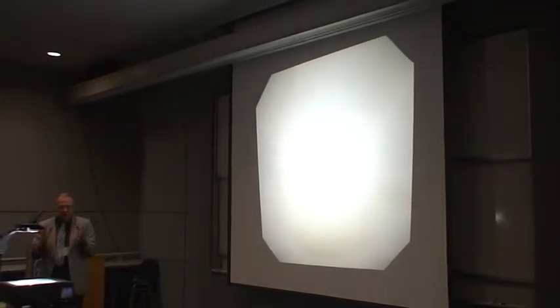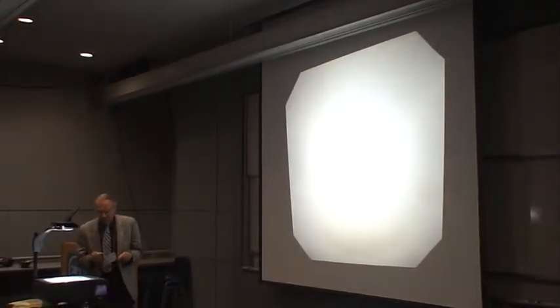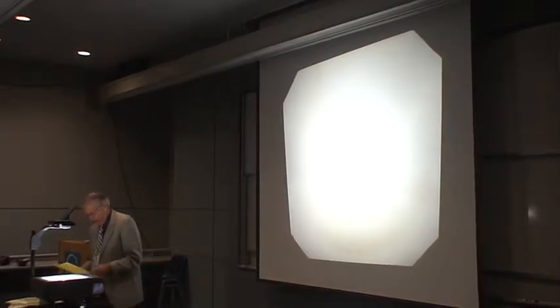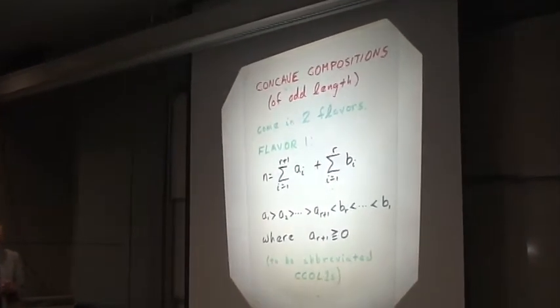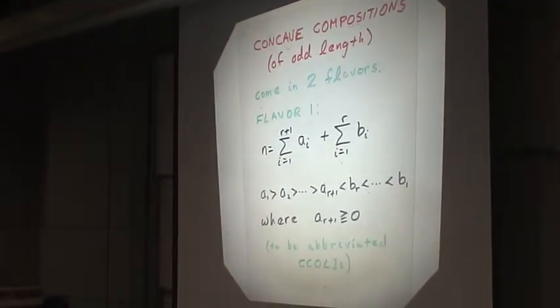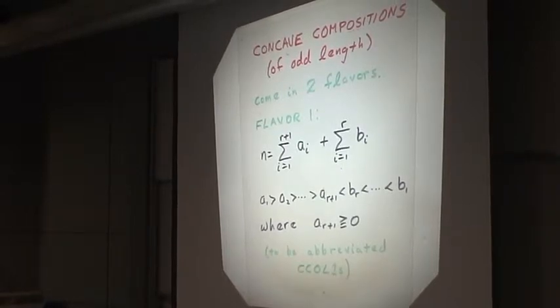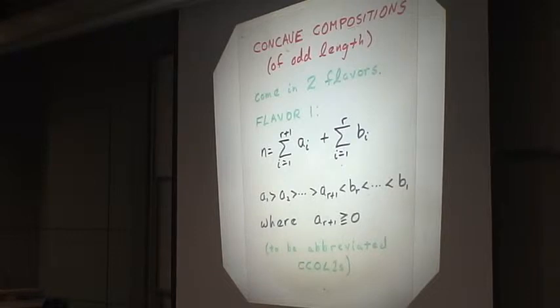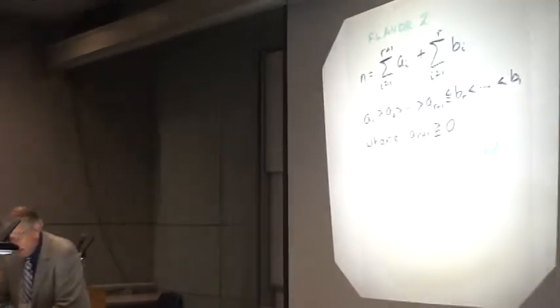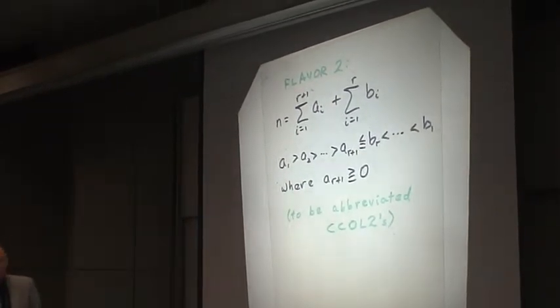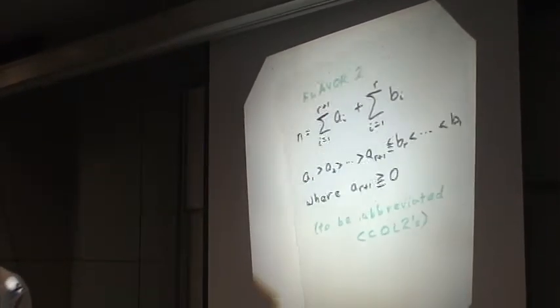Naturally, one might ask: what are the concave compositions of odd length? Are there similar theorems there? The answer is that for those, there are two types of odd-length concave compositions that produce interesting false theta function results — so they come in two flavors. The first flavor is where the middle part is in effect unique: it is this A_{r+1}. In the second case, Flavor 2, the middle part is not unique, and the B's starting out to the right might actually be equal to the A's.